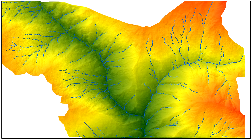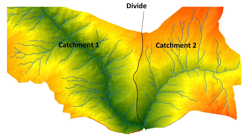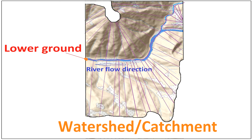In British usage, watershed can be termed as a water divide. A divide is the boundary between separate catchment areas and drainage basins, normally marked topographically by high grounds.